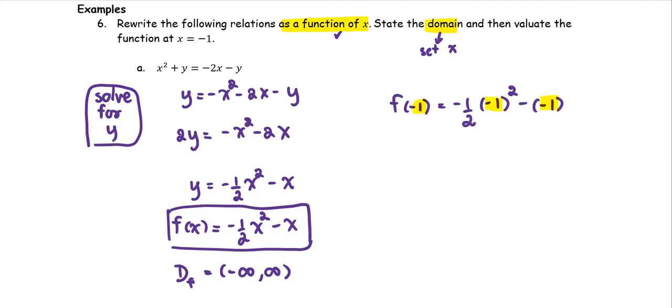To finish the computation, we get negative 1 half multiplied by 1 and then plus 1 equals negative 1 half plus 1, which equals 1 half. And this implies the ordered pair on the graph is going to be negative 1 comma 1 half.